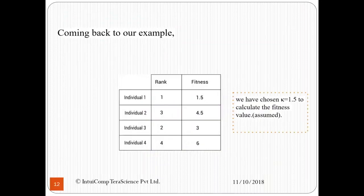Coming back to our example, let us define the rank and fitness for all of the individuals. The ranks 1, 3, 2, and 4 will then be multiplied by a factor of κ which we have taken to be 1.5, and the fitnesses result are 1.5, 4.5, 3, and 6.